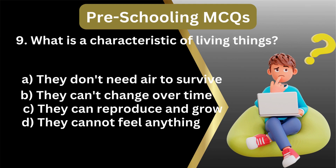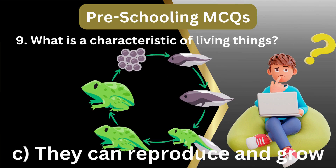9. What is a characteristic of living things? A. They don't need air to survive. B. They can't change over time. C. They can reproduce and grow. D. They cannot feel anything. Answer: C. They can reproduce and grow.